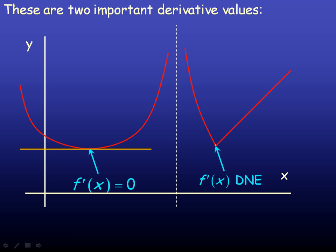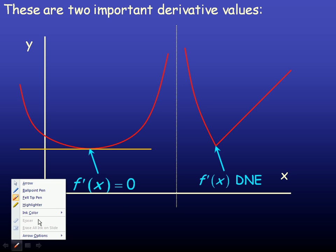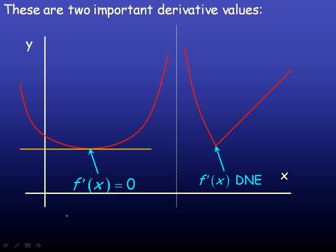The reason the derivative doesn't exist at a corner is that if you try to draw a tangent line coming from the left, it looks one way, but coming from the right it looks different. The fact that the tangent lines are not the same from either direction is why the derivative doesn't exist. By contrast, at a local minimum or maximum, tangent lines from just barely the left and just barely the right are both approaching horizontal, so the derivative is defined there and equals zero.